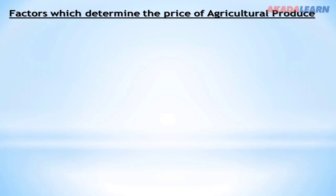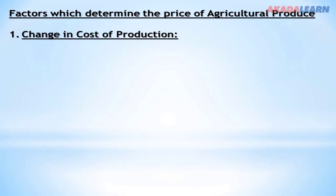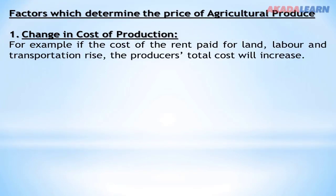Factors that determine the price of agricultural produce: the forces of demand and supply can affect the price of agricultural produce in the market. Factor number one is change in cost of production. For example, if the cost of rent paid for land, labor, and transportation rise, the producer's total cost will increase, which will definitely lead to an increase in price.